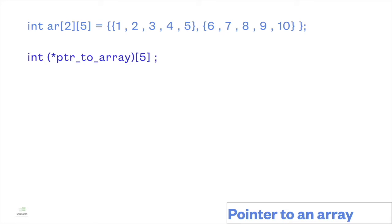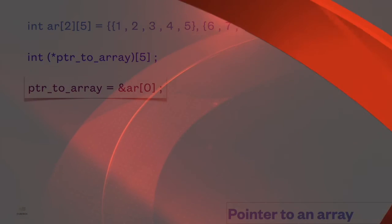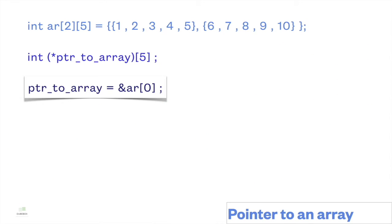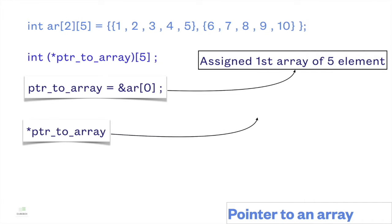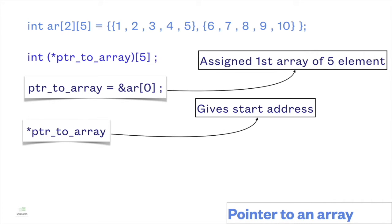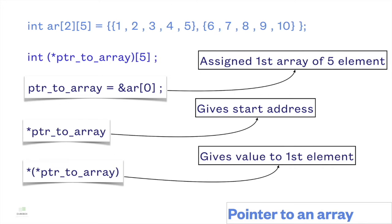Let's take a pointer to an array with five elements. We can use this pointer to either point to the first array or the second array. Here I have assigned the first array of five elements to the pointer. The pointer stores the start address of the first array, so `*ptr2array` will give the value of the start address, and `**ptr2array` will give the value of the first element in the first array.